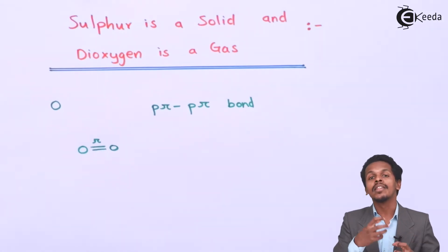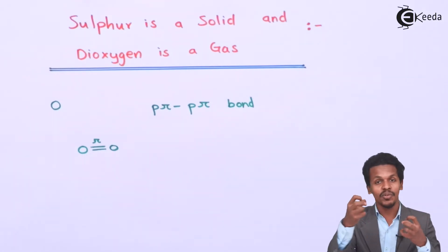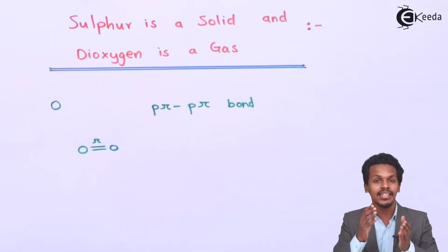When it interacts with other oxygen molecules, the Van der Waals force between the two molecules is very much less. And whenever these molecules are at room temperature, the Van der Waals force vanishes and the oxygen molecules get separated. That's the reason that oxygen molecule is basically a gaseous molecule.